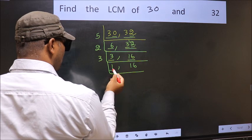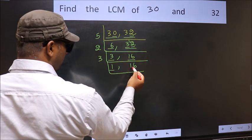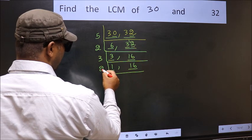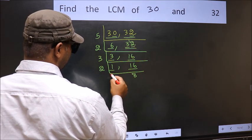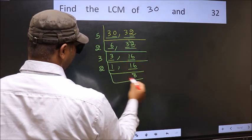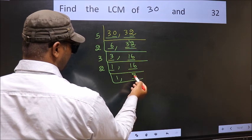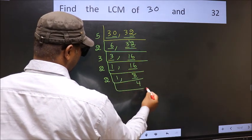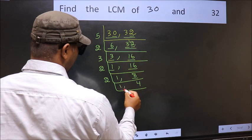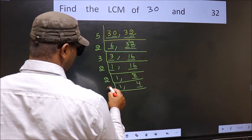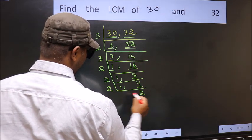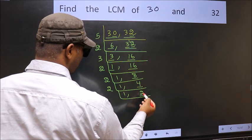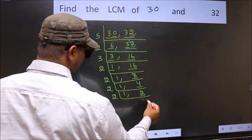Now we got 1 here, so focus on the other number, 16. 16 is 2 times 8. Now we have 8 — 8 is 2 times 4. Now we have 4 — 4 is 2 times 2. Now we have 2. 2 is a prime number, so 2 times 1 is 2.